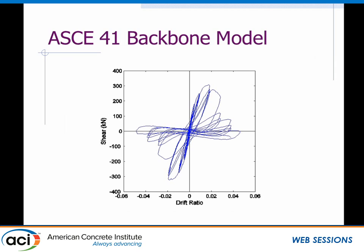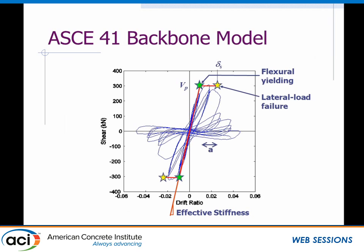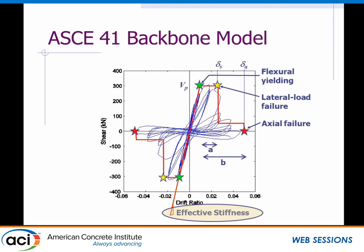This database can be used for many things, but I'm going to focus on application to ASCE 41 and what it tells us about the backbone model. That backbone model involves an effective stiffness up to yielding, then on to lateral load failure of the element, and then dropping off to axial failure. Let's start by looking at effective stiffness.